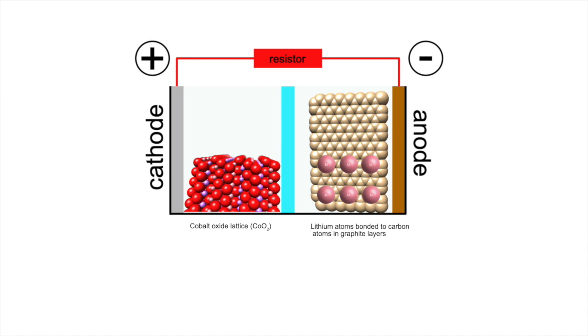In a lithium ion cell, there is a cathode made up of cobalt oxide, and an anode made of lithium atoms sitting in between the carbon atoms of graphite layers.